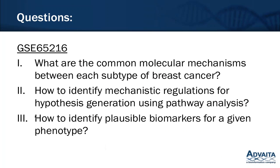Using the public dataset GSE 65216, a breast cancer cohort containing all four molecular subtypes, we wanted to ask some generic questions a life science researcher may have. First, what are the common molecular mechanisms between each subtype of breast cancer? Second, how can you identify mechanistic regulations to generate hypotheses using pathway analysis of iPathway Guide? Third, how can you identify plausible biomarkers for a given phenotype? By showing how to answer these generic questions, you'll get a better idea of how to answer your specific questions.